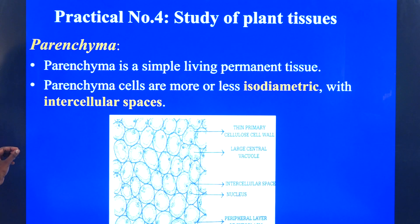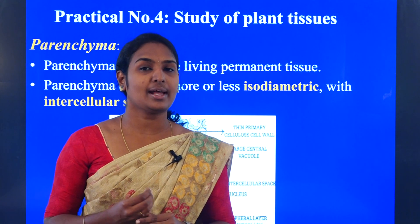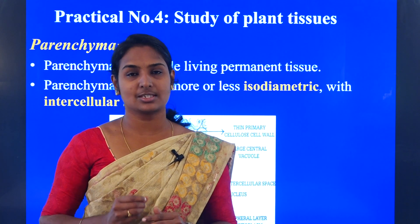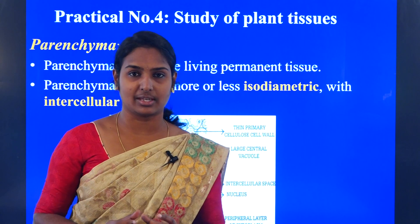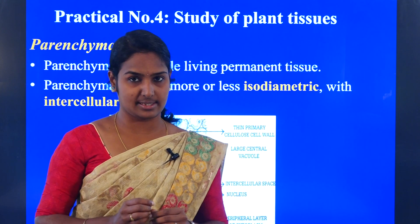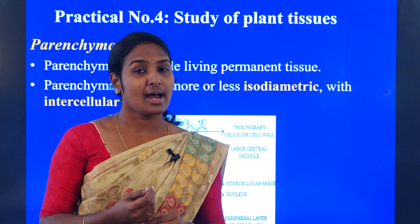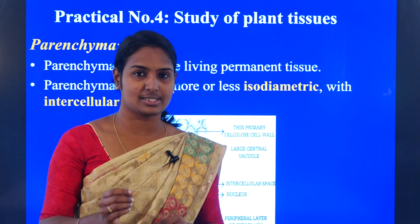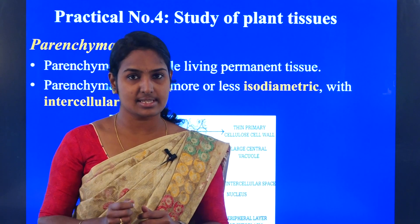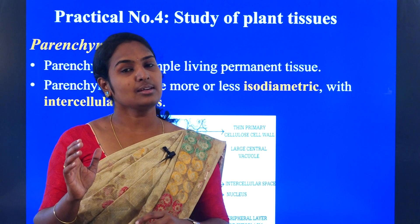For the study of plant tissues, we already know how we can classify a plant tissue. We can classify a plant tissue basically into two types: one we call it as simple tissue, and another we call it as complex tissue. With the help of a microscope, they will be focusing the slides — permanent slides — so you have to observe how it is going to look and identify which particular tissue has been focused.